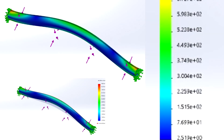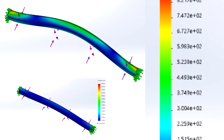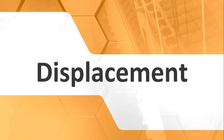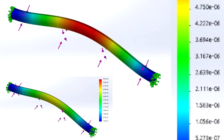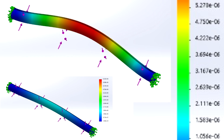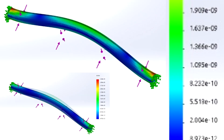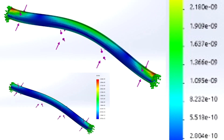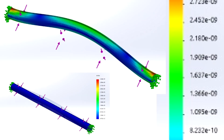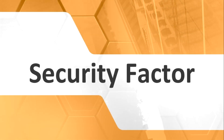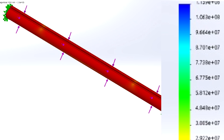Our belt shows an acceptable tension without over-effort, and a displacement without over-effort at the center of the belt. The shaft does not suffer over-bending, which prevents deformation. The bearing also has an acceptable value.